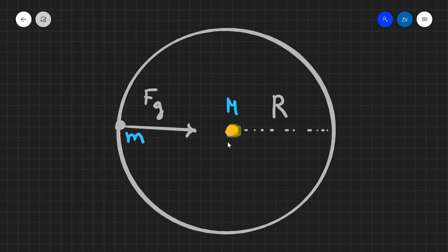What we're going to be doing in this video is deriving Kepler's third law. Now in order to derive this we have the following situation. We have a planet of mass lowercase m which is orbiting around a star which has a mass capital M.